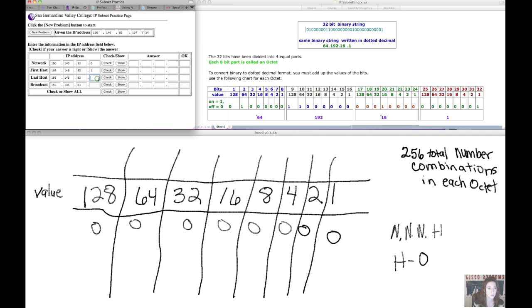The last available one would be the one right before the broadcast address, because the very last address in our network is the broadcast address, which we do not apply to any device within our network.